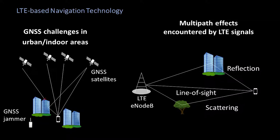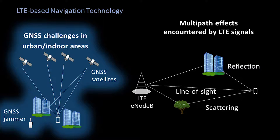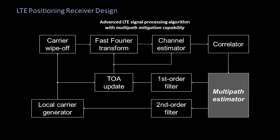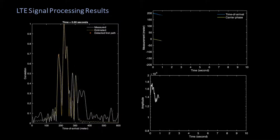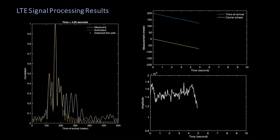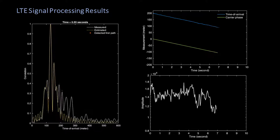LTE-based navigation technology is attractive for urban and indoor areas, where GNSS faces numerous challenges. One of the most difficult issues in exploiting LTE signals for navigation is the multipath effects. Our group developed an advanced LTE signal processing algorithm with superior multipath mitigation capability. The algorithm can detect the first path and generate accurate ranging measurements under harsh multipath conditions.